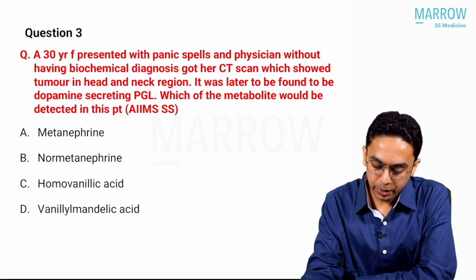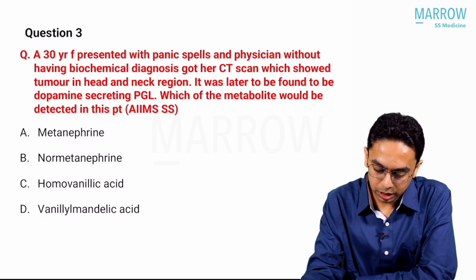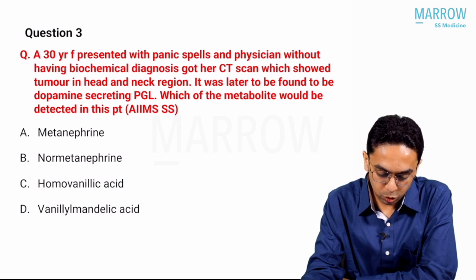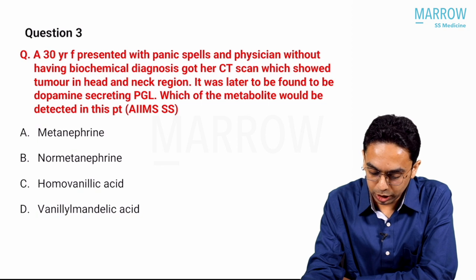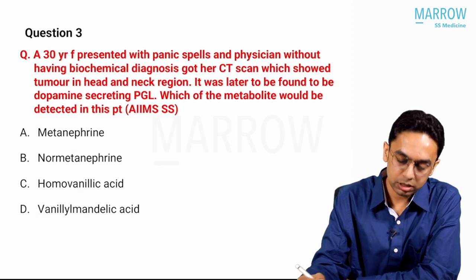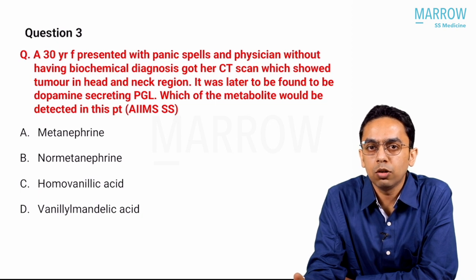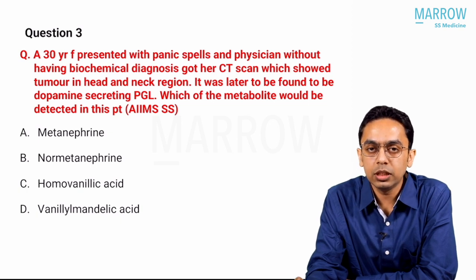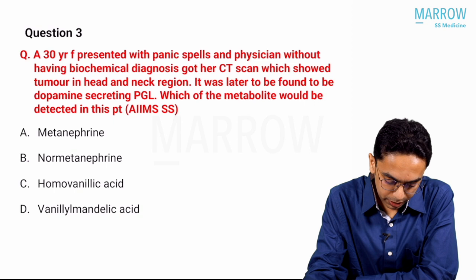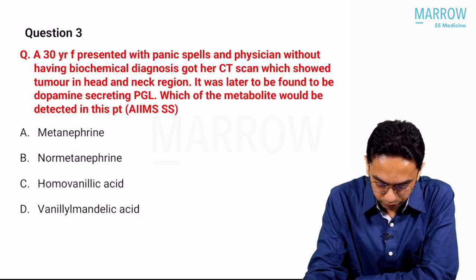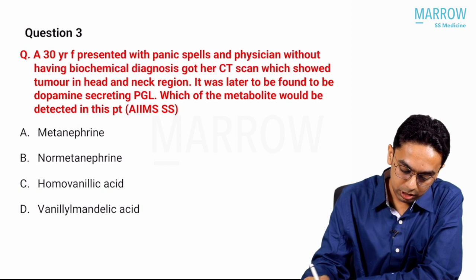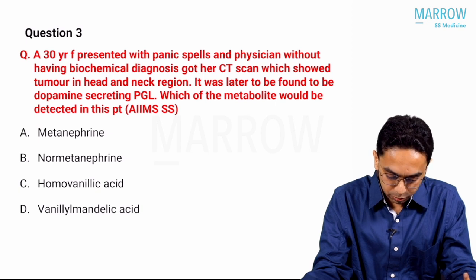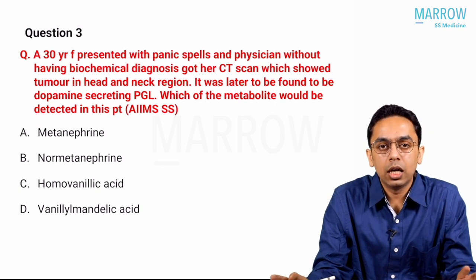Question number three: a 30-year-old female presented with panic spells. Without a biochemical diagnosis the physician got a CT scan, which showed a tumor in the head and neck region. It was later found to be a dopamine-secreting paraganglioma. Which metabolite would be detected? Options are normetanephrine, metanephrine, homovanillic acid (HVA), and vanillylmandelic acid (VMA).